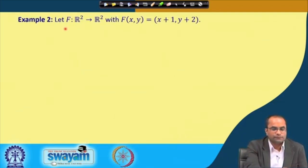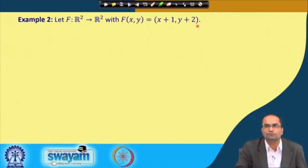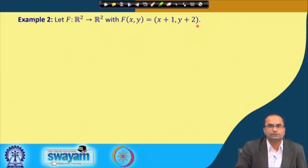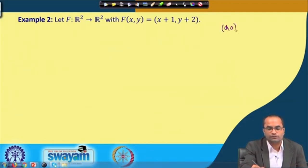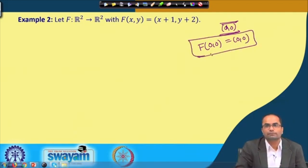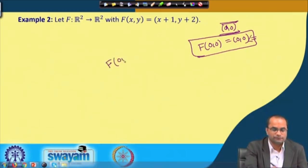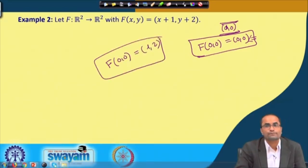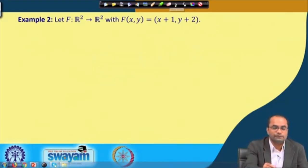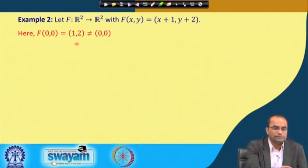Another example: the function F defined by F(x,y) = (x+1, y+1). The question is whether this is a linear map. One property of a linear map is that it always maps 0 to 0. The zero element in R² is (0,0). When we apply F on (0,0), we get (1,2), not (0,0). Therefore, this cannot be a linear map, since it does not map the zero element to the zero element.